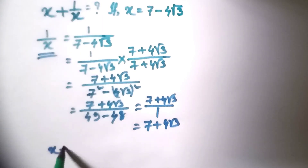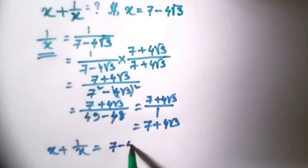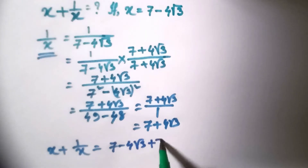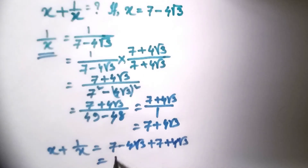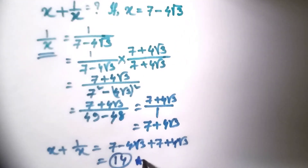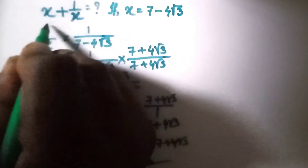So x plus 1 by x is equal to (7 minus 4 root 3) plus (7 plus 4 root 3). The plus and minus 4 root 3 terms cancel out, so the value is 14. This is the answer.